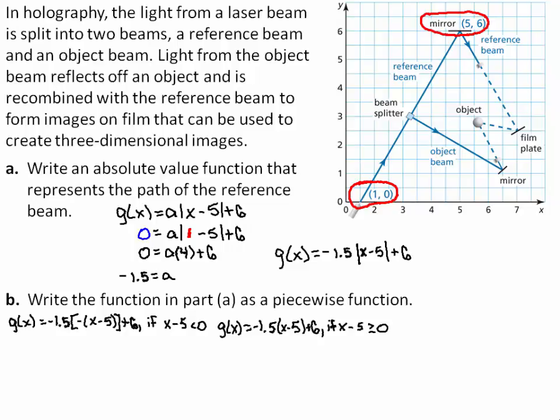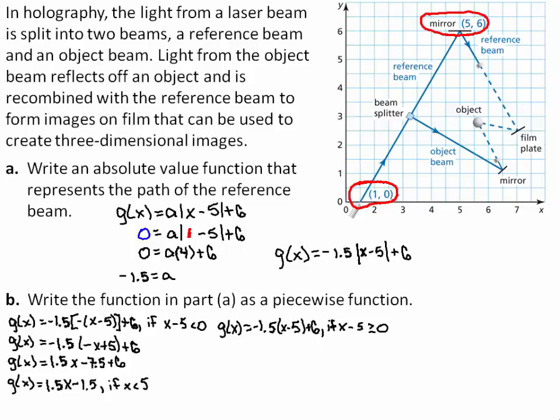First, simplify g equals negative 1.5 times the negative of the quantity x minus 5, plus 6 if x minus 5 is less than 0. Distributing the negative through the quantity x minus 5, you get negative 1.5 times the quantity negative x plus 5, plus 6. Combining like terms, you are left with 1.5x minus 1.5. The inequality x minus 5 is less than 0 simplifies to x is less than 5. So you have g equals 1.5x minus 1.5 if x is less than 5.